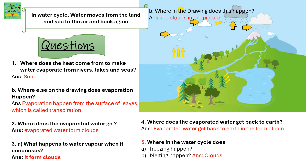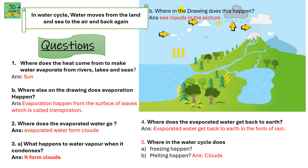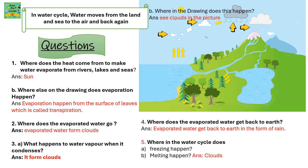In the water cycle, water moves from the land and sea to the air and back again to the land. Now here are a few questions. Where does the heat come from to make water evaporate from rivers, lakes and seas? It's from the sun. Where else on the drawing does evaporation happen? Evaporation can happen from the surface of the leaves, which is called transpiration.